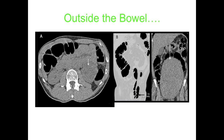Here are some examples of extra-colonic findings. On this non-contrast low-dose imaging, there's abnormal soft tissue in an area, and if you look on the coronal view there's a huge pelvic mass taking the entire pelvis and part of the abdomen. This is an ovarian lesion — something you would also detect on CT colonography.